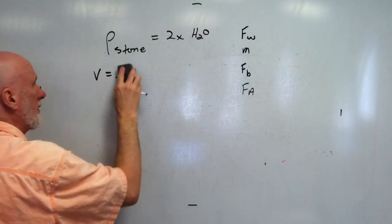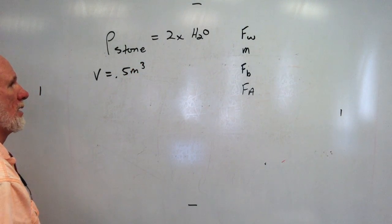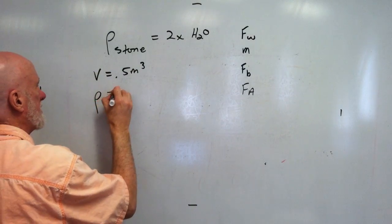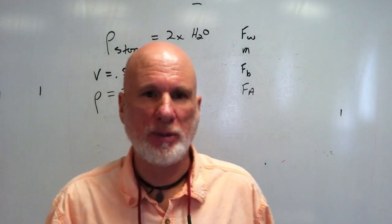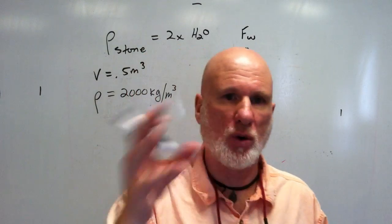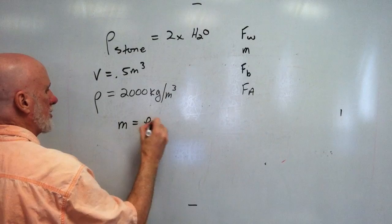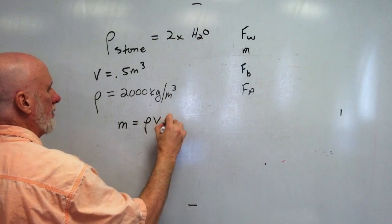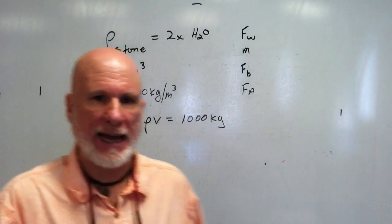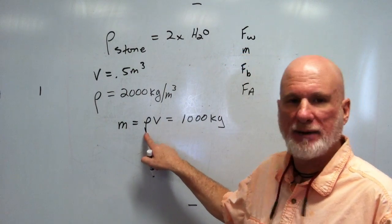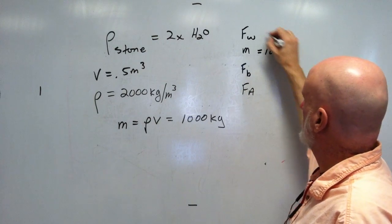The volume is zero point five cubic meters. The density is two thousand kilograms per cubic meter — that's twice the density of water, which is one thousand. So the mass equals rho times V: two thousand times zero point five equals one thousand kilograms.